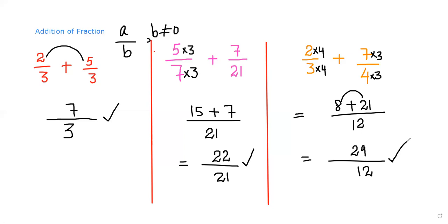So there are three cases in the addition of fractions. First, if the denominators are already the same, we proceed directly. Second, if they are different, we check which number to multiply with the smallest denominator to get the larger one. Third, if no such number exists, we take each fraction's denominator and multiply it up and down into the other fraction, making both denominators the same.